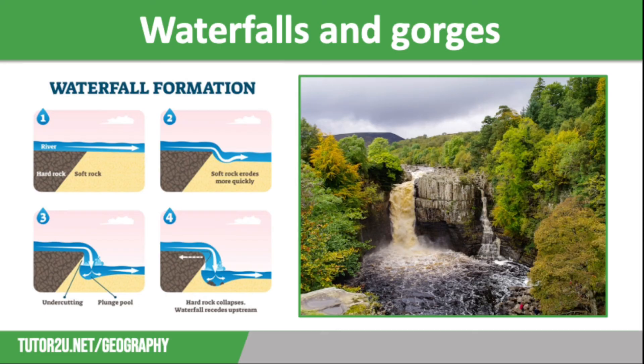The collapsed rock then gets picked up by the turbulent flow of the water and will help erode the base further, creating a plunge pool. The erosion here means that undercutting continues, creating a new overhang. This again will collapse due to gravity, repeating the process and causing the waterfall to retreat upstream, leaving a steep-sided gorge downstream, as you can see in the photograph on the screen.